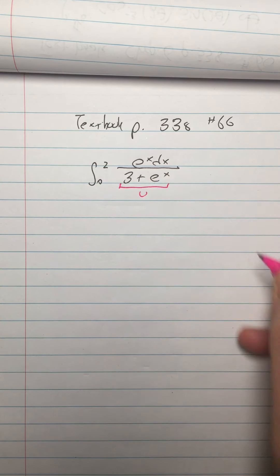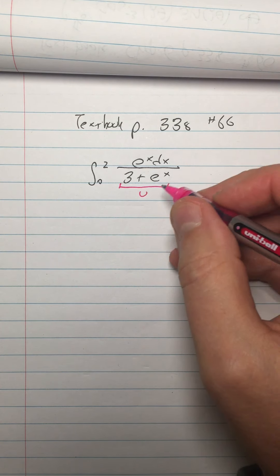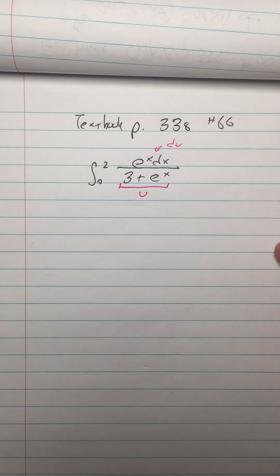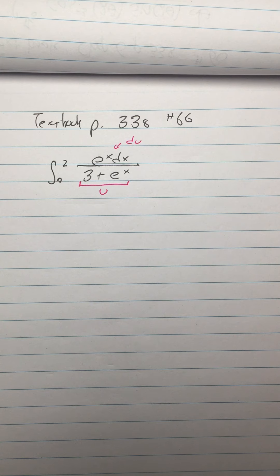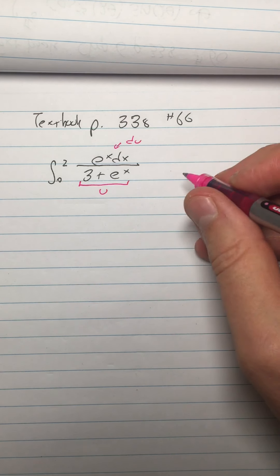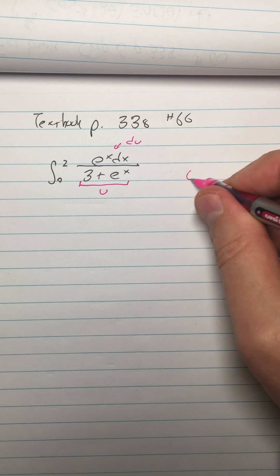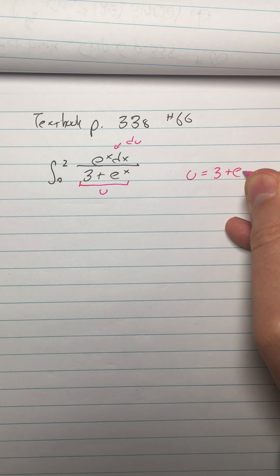The denominator is often a good pick for u, because then I can have, here's u, up here is clearly du, so I have du over u, and that's ln. Like, you're going to use this thing, if I have du over u, that's ln. You'll see what I mean in a minute. So we're going to say u equals 3 plus e to the x.